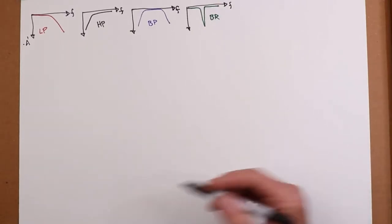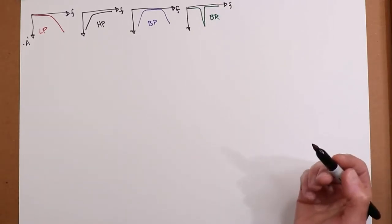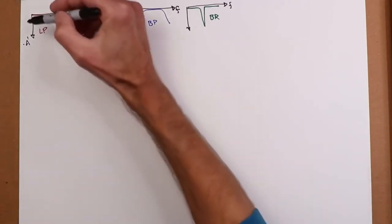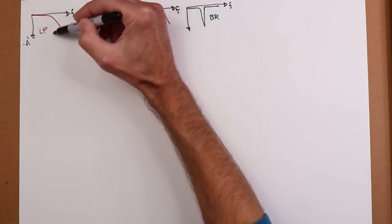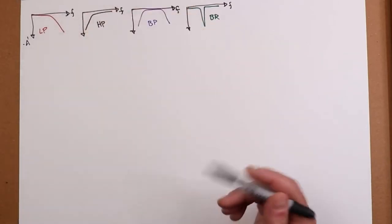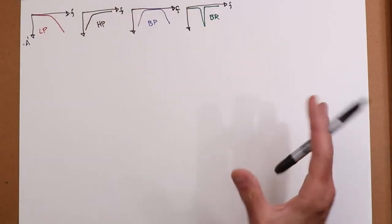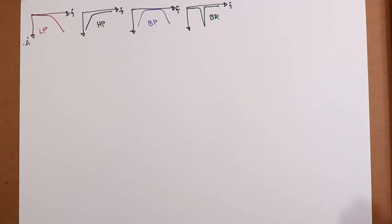So we can define sort of three regions. A pass band, a stop band, and then the area in between, the transition band, where we get some attenuation, but maybe not a ton of attenuation.